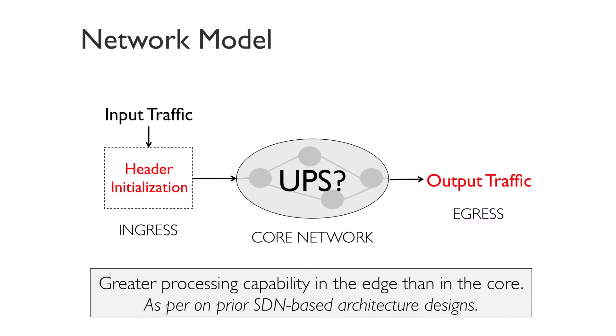Our model assumes that the network edge is capable of greater processing complexity than the core. This is in line with the edge-core split proposed in prior SDN-based architectures, where the core focuses on delivering packets from one point to another, while the edge is responsible for everything else. Similarly in our model, the core runs a fixed algorithm taking care of packet delivery, while the edge ensures headers are initialized appropriately to meet the desired objective.